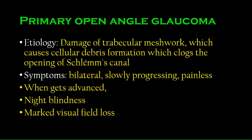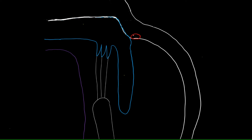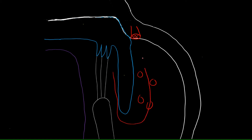The etiology specifically in open-angle glaucoma is damage of the trabecular meshwork. Remember from the diagram — there's this opening covered by a mesh called the trabecular meshwork, which opens into the canal of Schlemm. If large chunks of particles form and clog this meshwork, the flow of aqueous humor is blocked. There is production of aqueous humor but no exit, which increases intraocular pressure and predisposes to glaucoma.